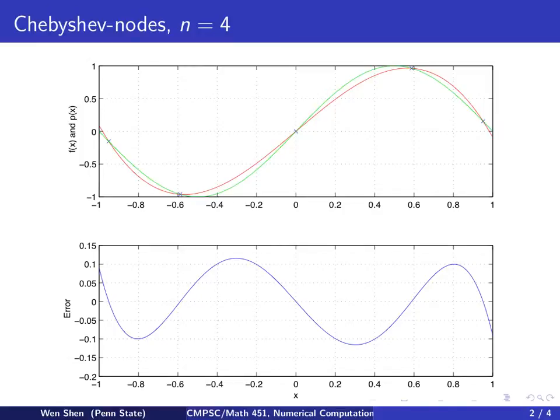Here, the first plot is the plot of the function f and the polynomial p. So here's p4, a polynomial of degree 4.